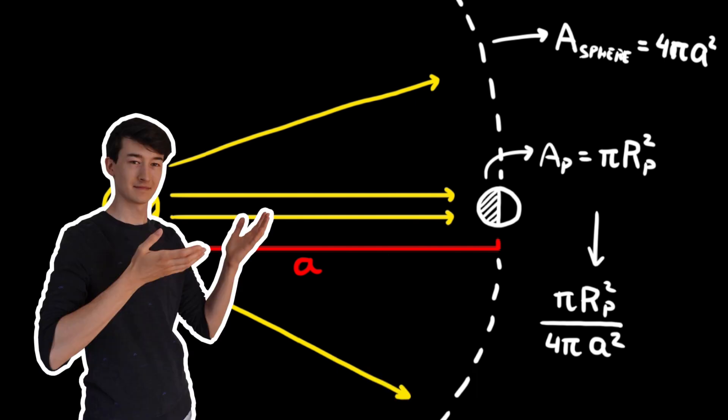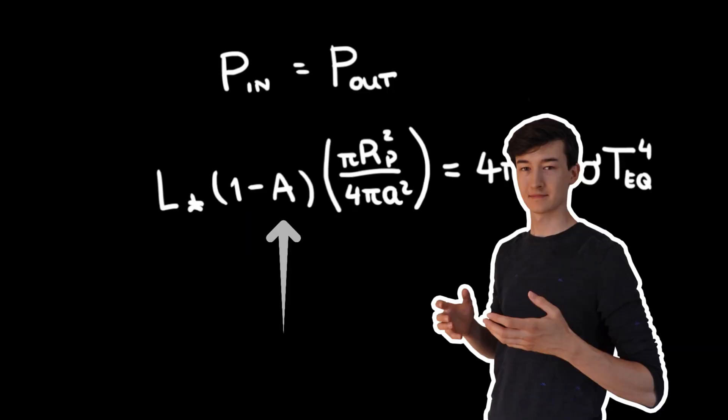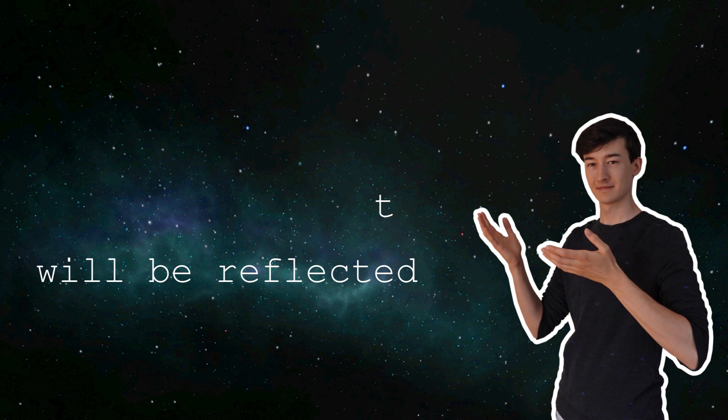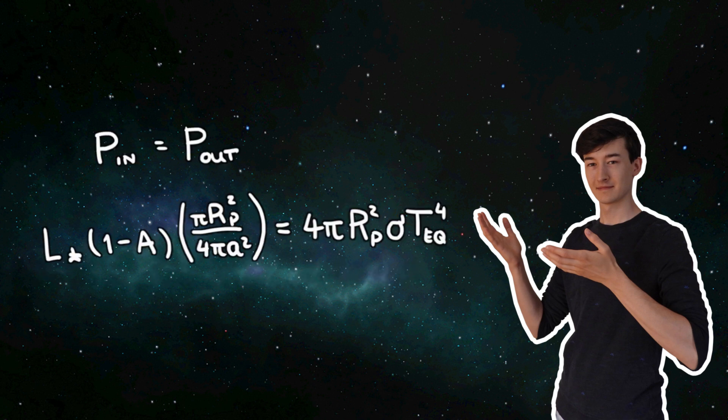Now we have the fraction of light emitted by the star that is actually reaching the planet. Additionally, we have this reflectivity theme. Imagine a planet has an albedo of 0.9. That means it reflects 90% of the light hitting it. That energy will not be absorbed and thus not heat up the planet. So that would reduce the amount of power on the left side of this equation.